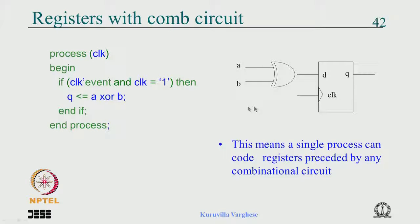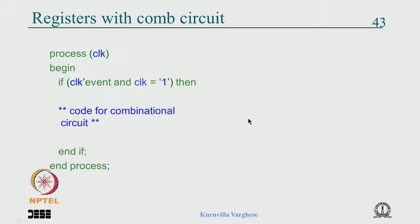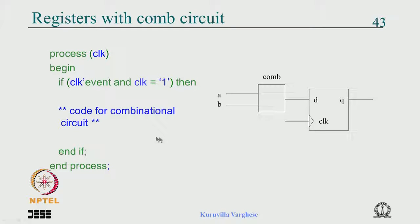A register with preceding combinational logic — which can be very complex — can be coded in a single process. You write 'if clock'event and clock is equal to 1 end if' and inside that write code for the combinational circuit using case statements, nested ifs, and so on. Whatever you write inside appears at the input of D. Any assignment you make under clock'event and clock is equal to 1 gives you a flip-flop or register.